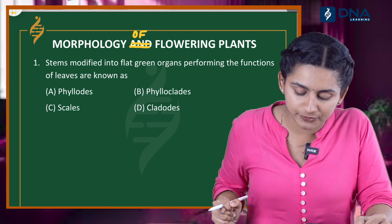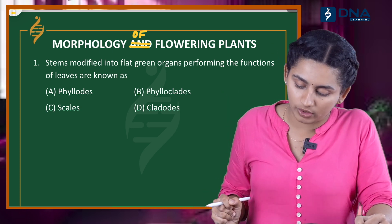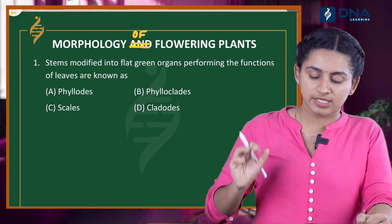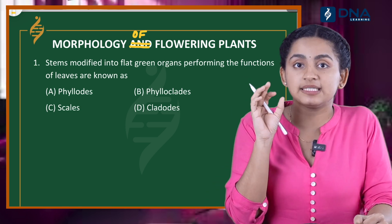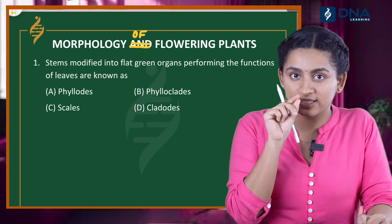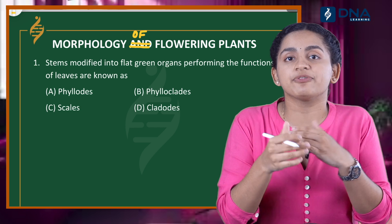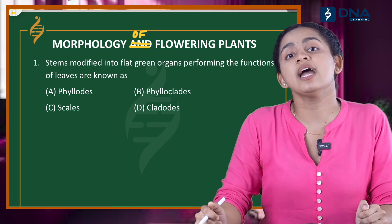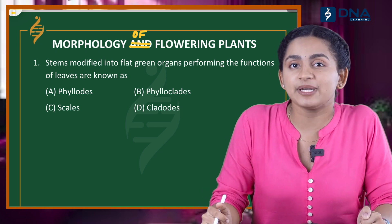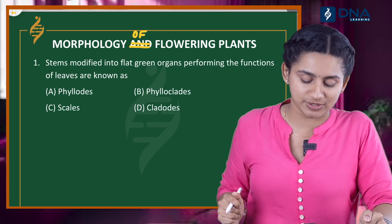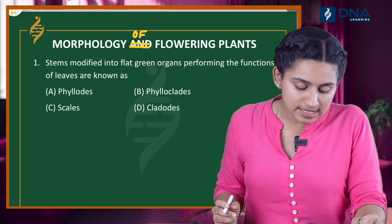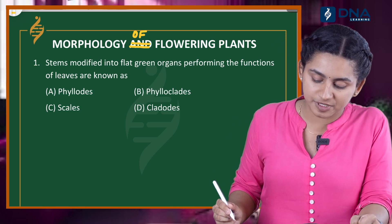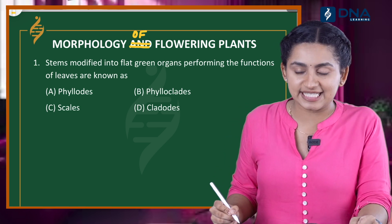Question 1: Stems modified into flat green organs performing the functions of leaves are known as what? So, stems that are modified to perform leaf functions — what is the name of this leafy structure? Let's see the options. Option A: phyllodes. Option B: phylloclades. Option C: scales. Option D: cladodes.